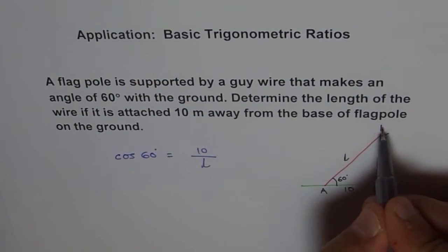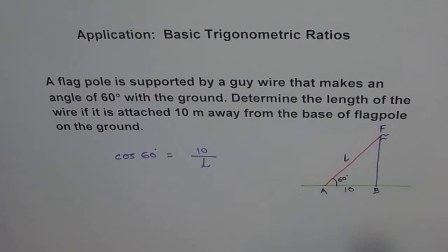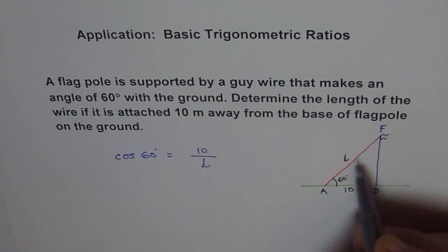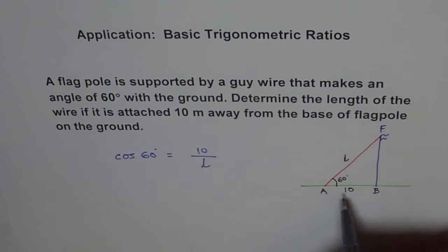And then you have to sketch your diagram and specify what is what. So let's write this point as F. BF represents your flagpole. And FA is the wire attached 10 meters away. You can write meters here. And 60 degrees is the angle.